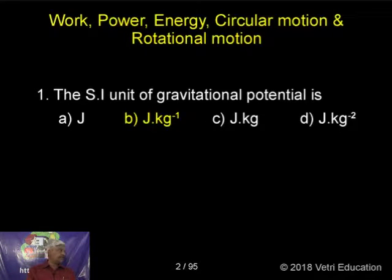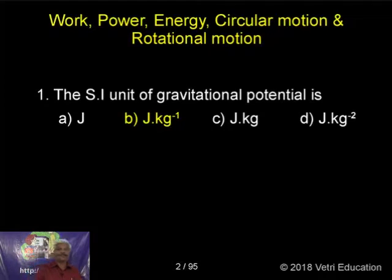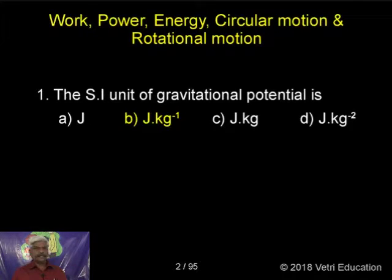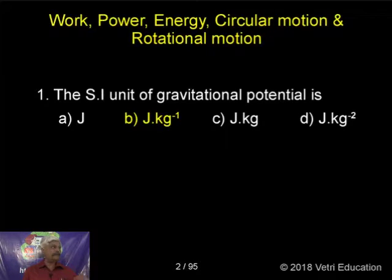The SI unit of gravitational potential — you should know what is the difference with gravitational potential. Kindly go through your notes. I have already given detail about what is gravitational potential. Gravitational potential means it involves G; G must be there. That is joules per kilogram.